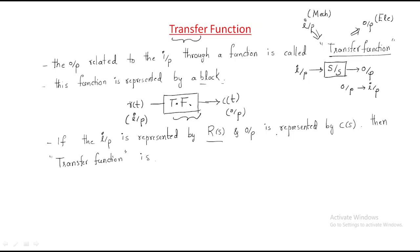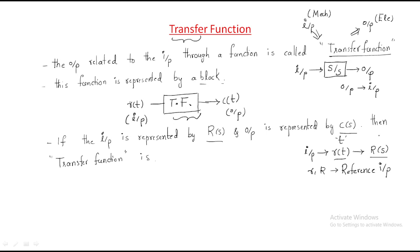If the input is represented by R(s) and the output by C(s), then we can write the transfer function accordingly. For any system, the input in the time domain is taken as r(t). If you Laplace transform this it becomes capital R(s). The input is called the reference input — that's why it is r(t) or R(s): r(t) in time domain, R(s) in the frequency domain.